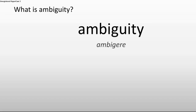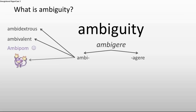Here you can see it in bold letters. Ambiguity comes from the Latin word ambigere, which we can split into ambi and agere. You might know ambi from other words like ambidextrous, or ambivalent, or ambipom, if you're a Pokemon fan. And ambi basically means something like on both sides, or both, or two.